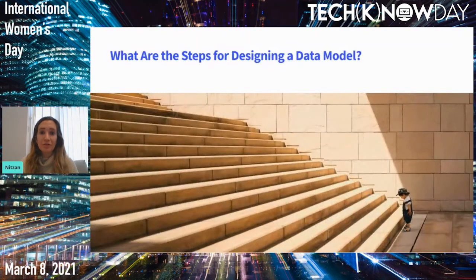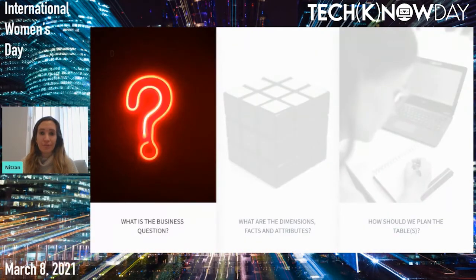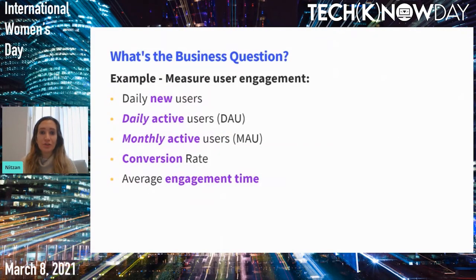So what are the steps for designing a good data model? The first thing we'll need to do is understand what the business question is. Let's assume that our company is launching a new product and we want to measure user engagement. More specifically, we want to measure the daily new users, the daily active users, the monthly active users, the conversion rate, and the average engagement time. These requirements look really good and are not vague, but sometimes we can get requests that are really vague, and it's important to understand exactly what they mean.